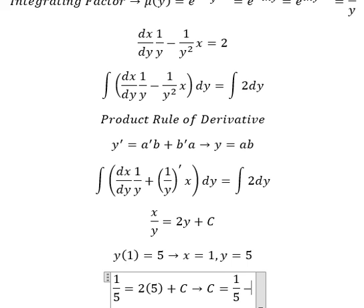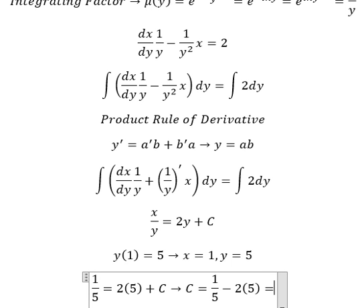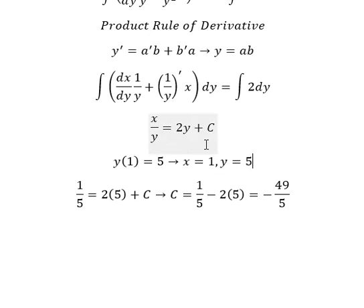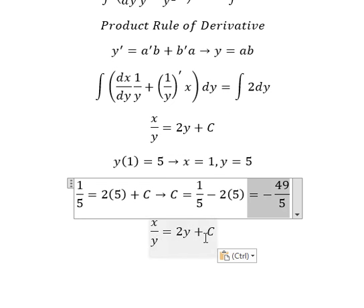We have the final answer. We have negative 49 over 5, and now we put this one here.